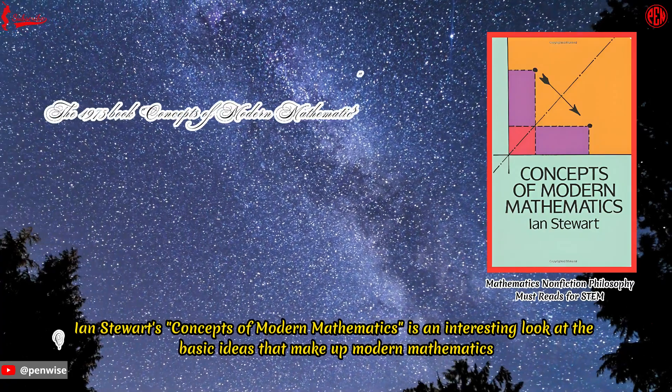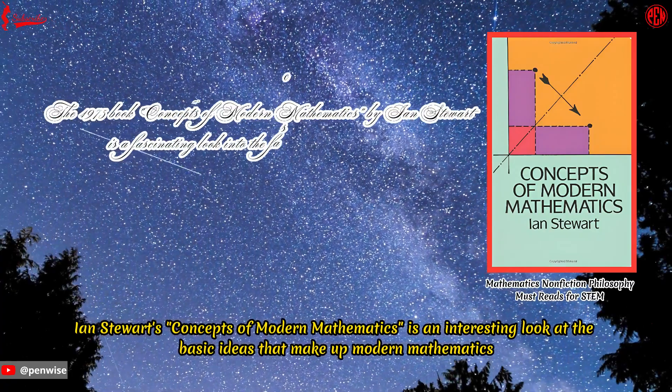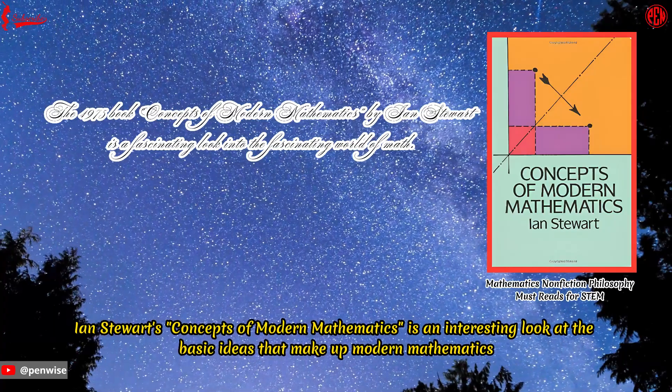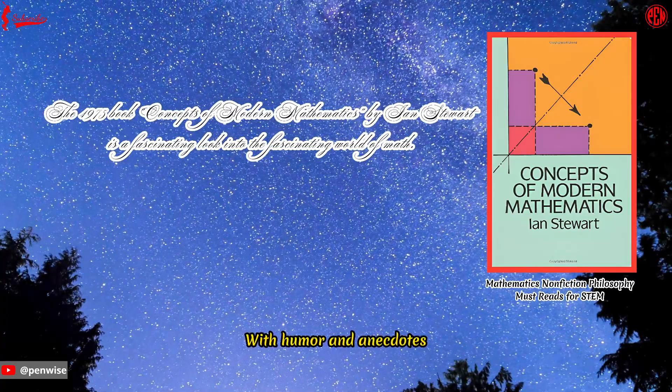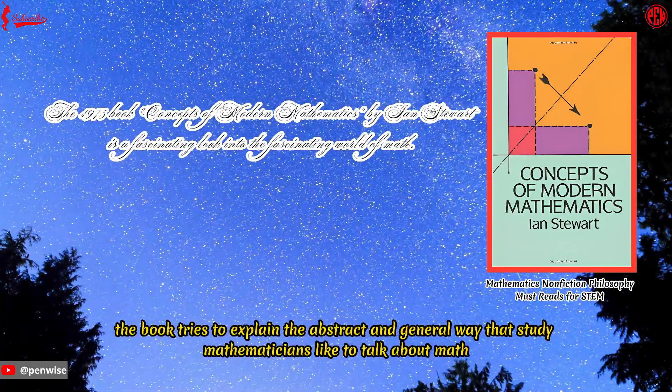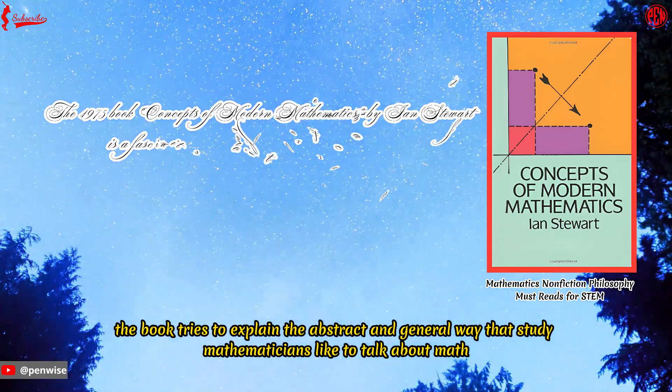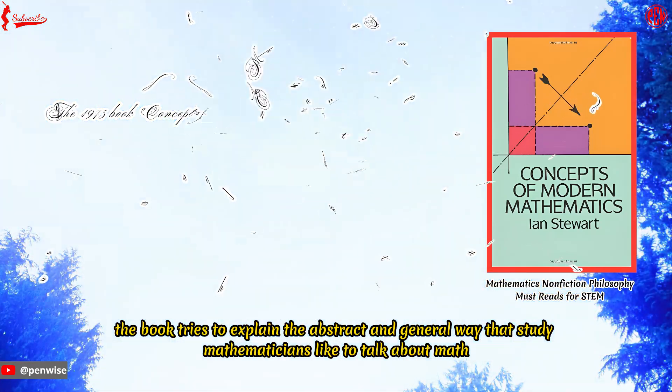Ian Stewart's Concepts of Modern Mathematics is an interesting look at the basic ideas that make up modern mathematics. With humor and anecdotes, the book tries to explain the abstract and general way that mathematicians like to talk about math.